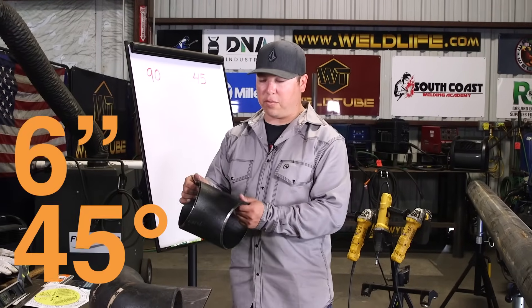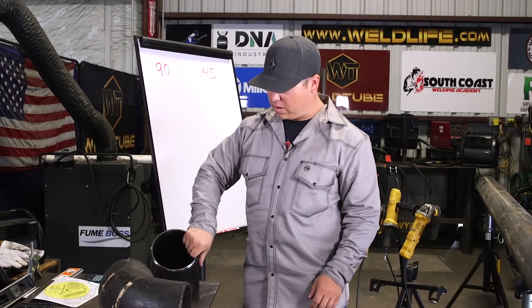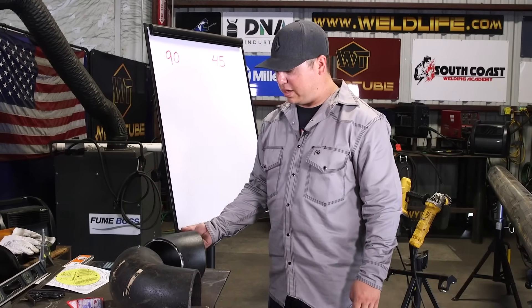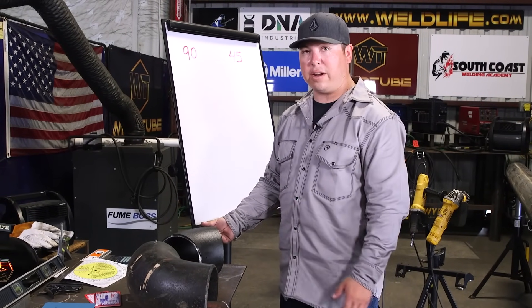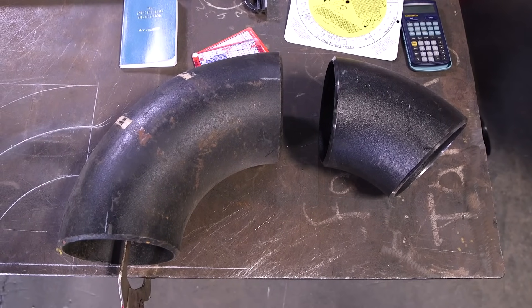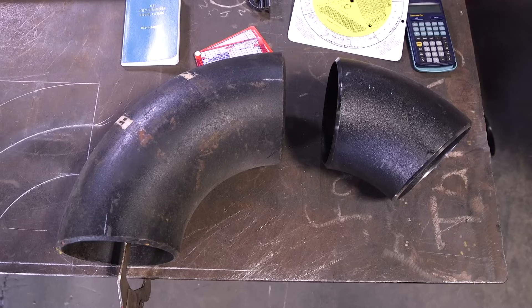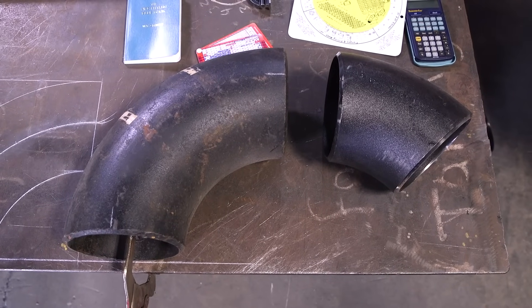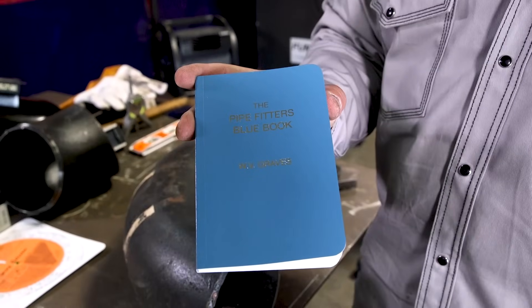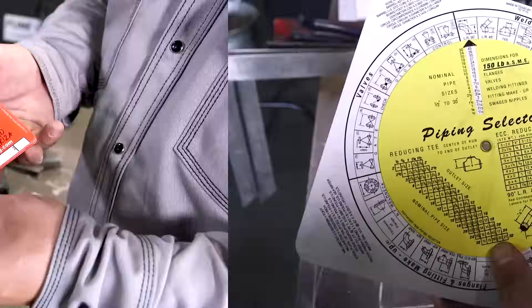I have a 6 inch 45 here. I'll show you guys what the takeoff of that looks like. As you can see, it's pretty much a long radius 90 cut in half. And the takeoff for this is going to be very different than finding the takeoff for this. That information can also be found on your blue book, chico cards and piping selector.